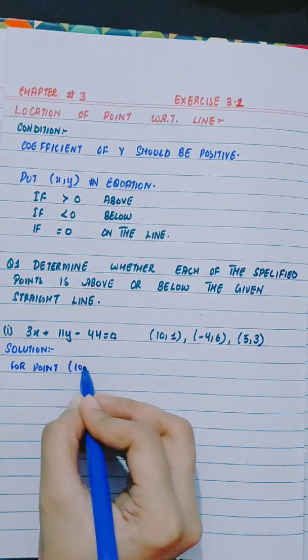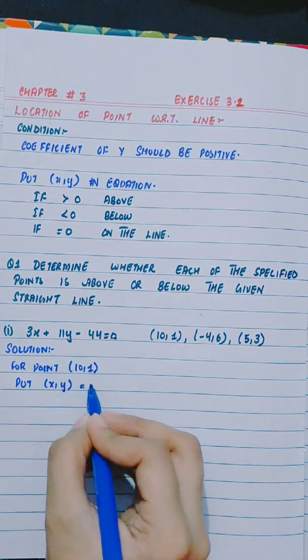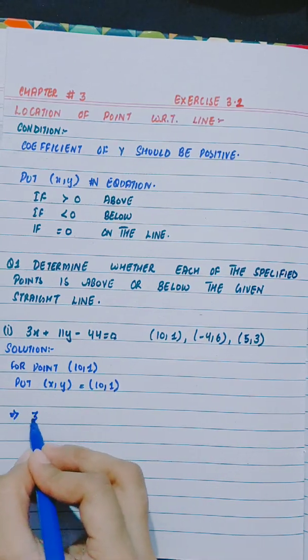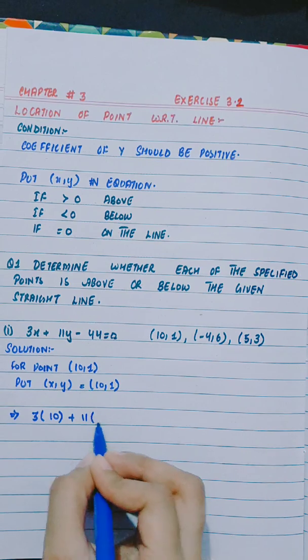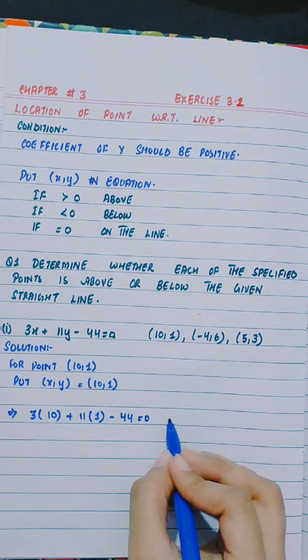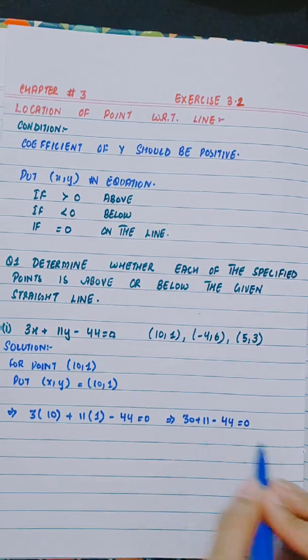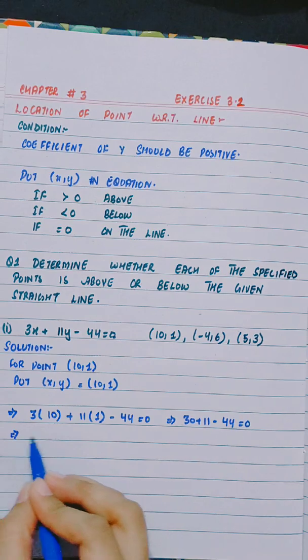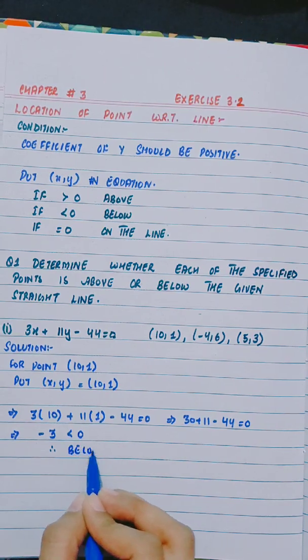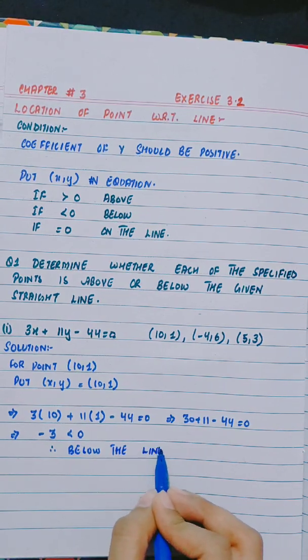For point (10,1), put x, y equals (10,1). 3x plus 11y minus 44 equals 0. 30 plus 11 minus 44 equals minus 3, less than 0. Therefore, below the line.